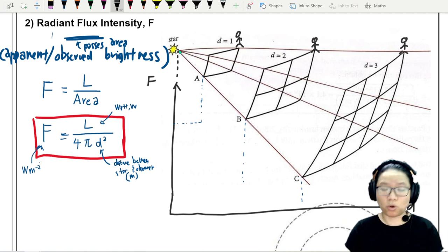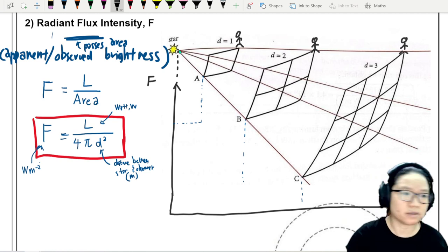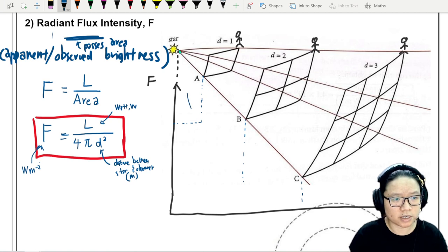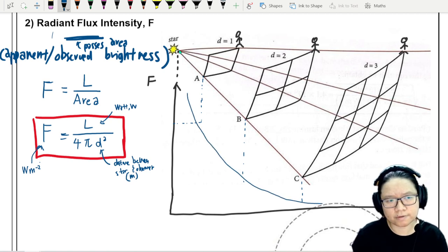It follows the inverse square law. These are all area of spheres. So surface area is 4πD². And if I join them together, I sort of get this relationship, something like this. It follows the inverse square relationship.